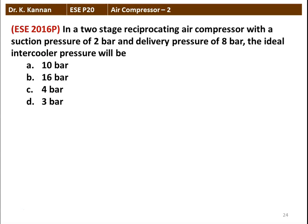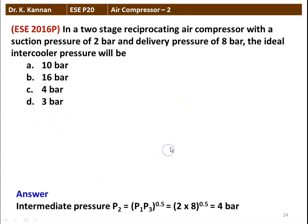The first question is from the 2016 question paper. In a two-stage reciprocating air compressor with a suction pressure of 2 bar and delivery pressure of 8 bar, the ideal intercooler pressure will be. The intermediate pressure P2 equals the square root of P1 times P3, that is (P1·P3)^0.5. P1 is the suction pressure, P3 is the delivery pressure, and P2 is the intermediate pressure between the low pressure and high pressure cylinders. Substituting: (2 × 8)^0.5 = 16^0.5 = 4 bar. The answer is 4 bar.